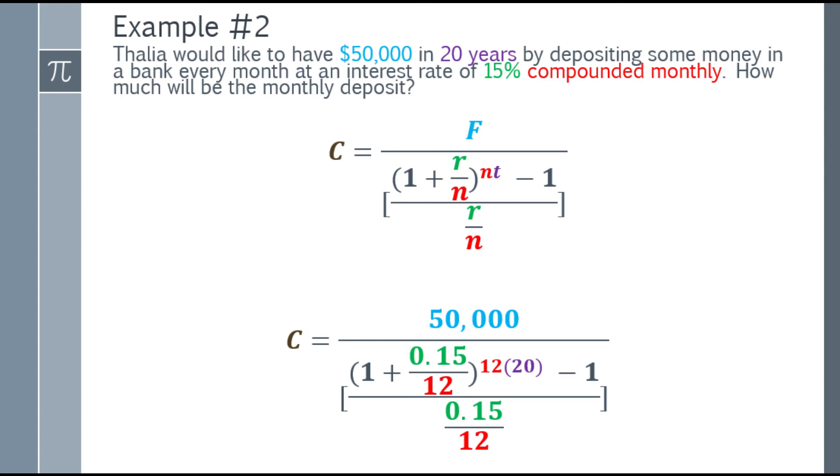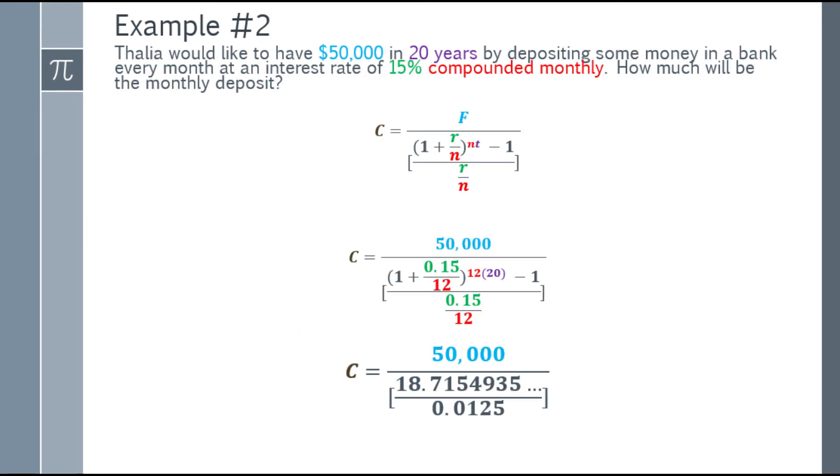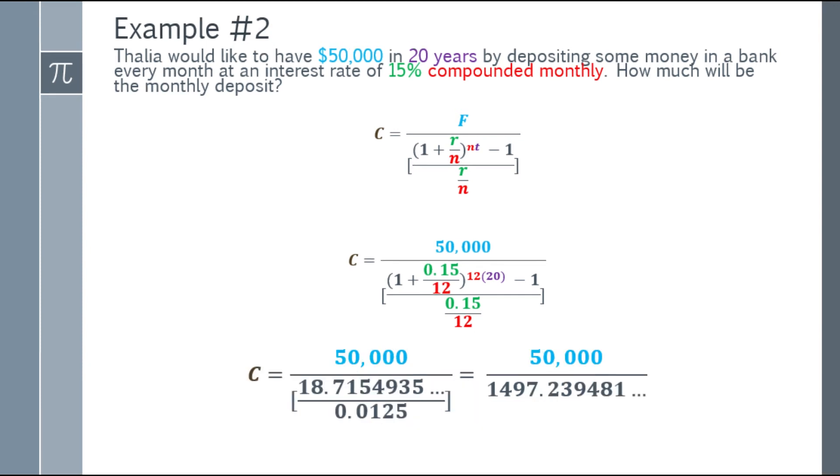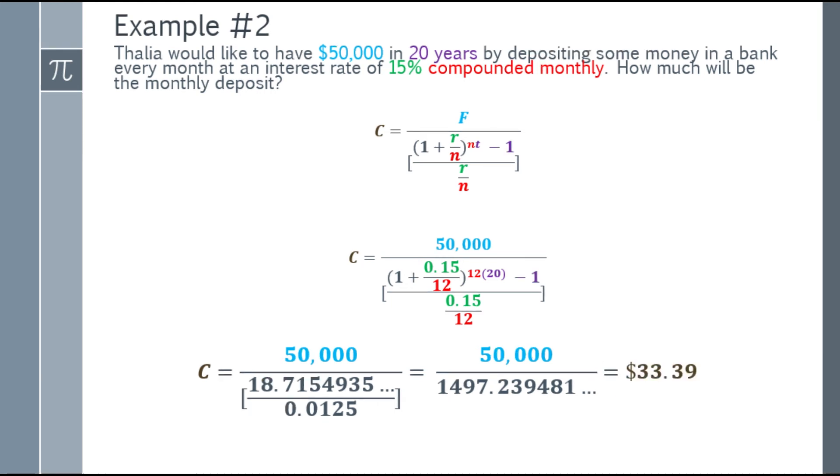Let's simplify further. For the parentheses part, 1 plus 0.15 over 12, to the exponent of 12 times 20, minus 1, that equals 18.7154935. The 0.15 over 12 equals 0.0125. Simplify further. Divide 18.7154935 by 0.0125, that equals 1497.239481 and so on. Lastly, 50,000 divided by 1497 and so on equals $33.39.